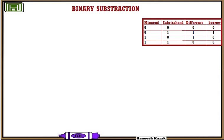You need to memorize this table. Here we have 4 columns: minuend, subtrahend, difference, and borrow. Here we have the binary values. 0 minus 0: difference is 0, borrow is 0.